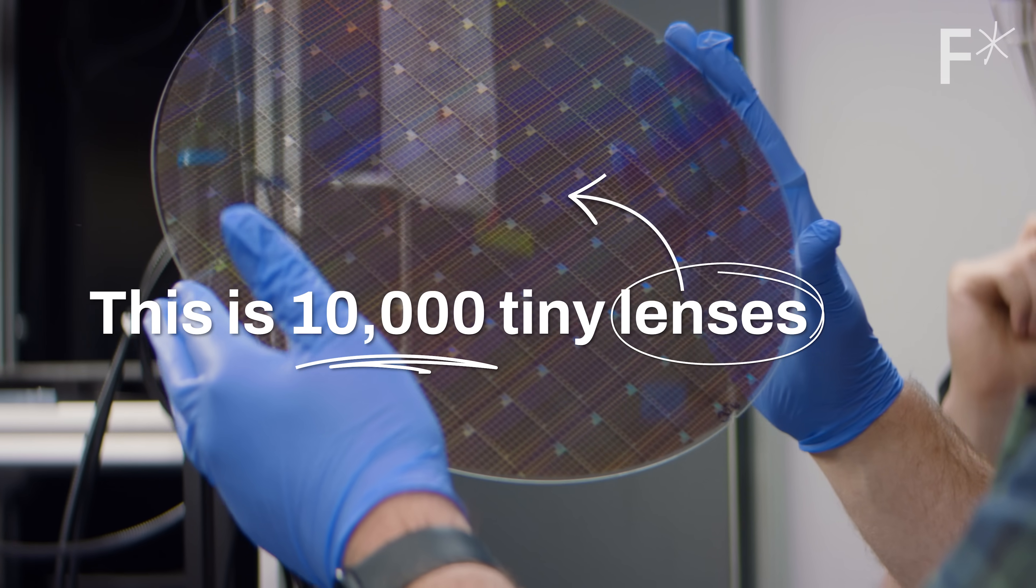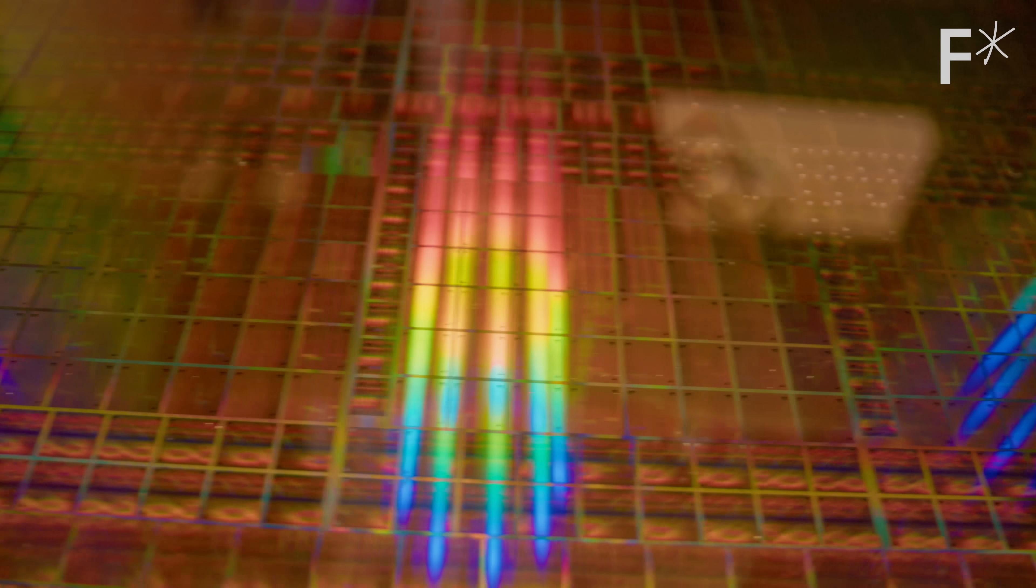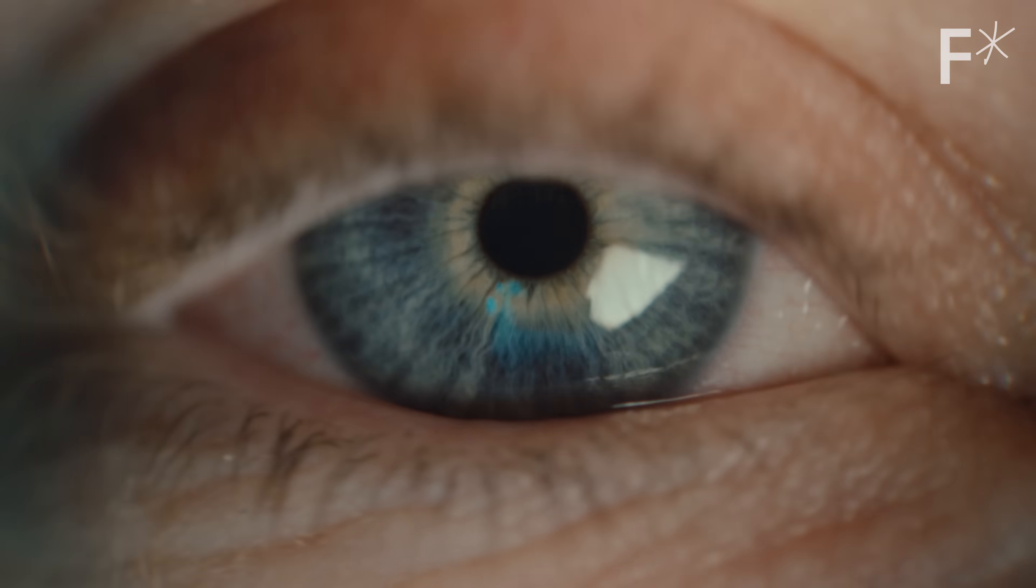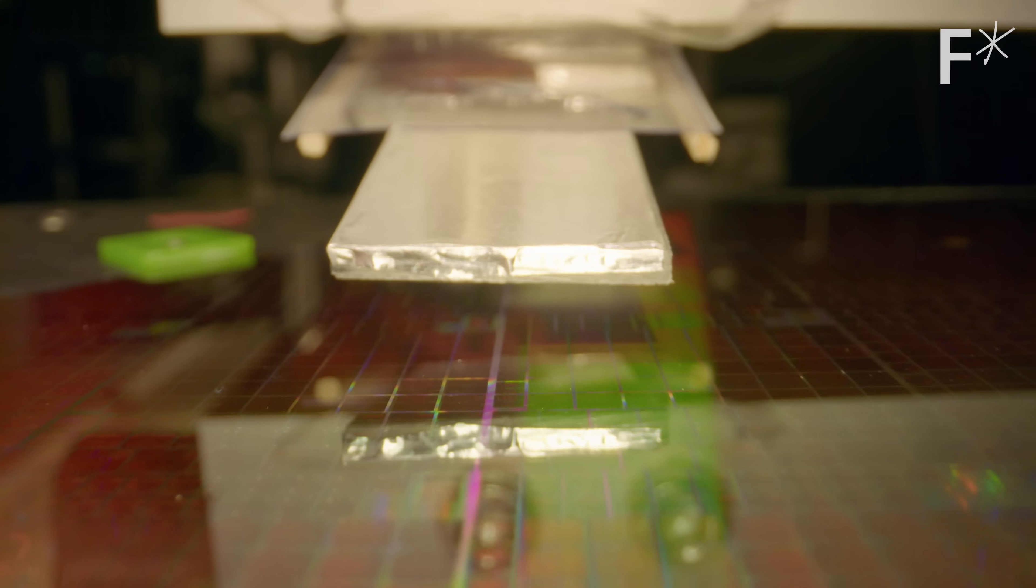This is 10,000 tiny lenses. Each of those lenses has very, very small structures, 100 nanometer structures, so millions of structures on each lens that can control light in exactly the way that we want to. This is nothing like the lenses in your camera or your eye, and that's kind of the point. This is a totally new approach to making optics.